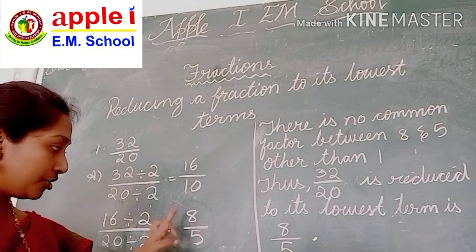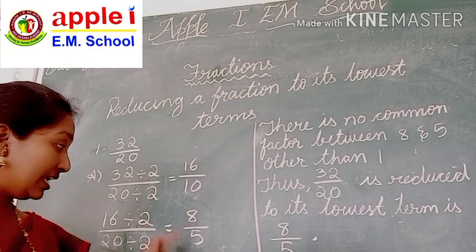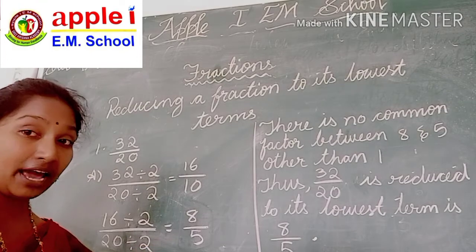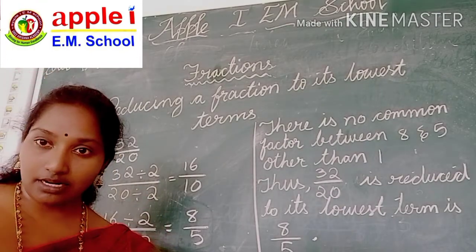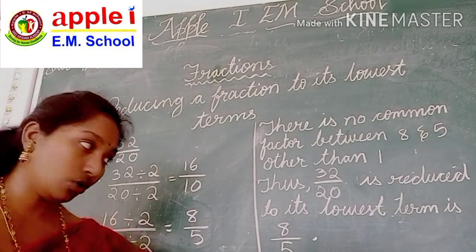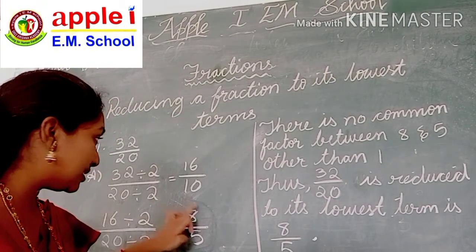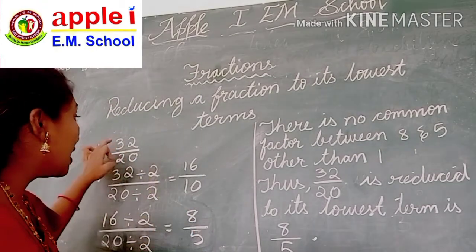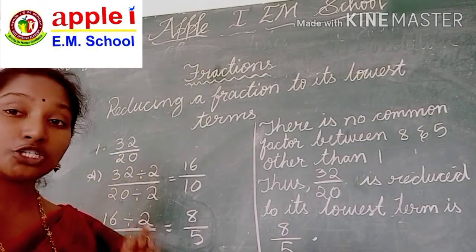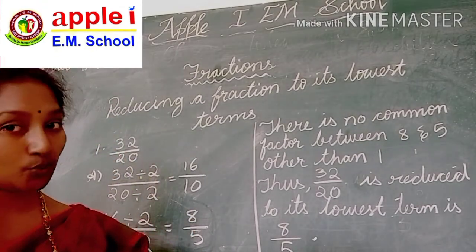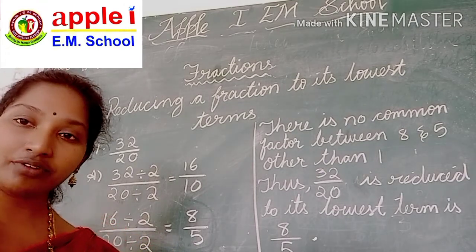Here you got 8 and 5. Now 8 and 5 will come only in the 1 times table. So this is the lowest term for 32 by 20. Understood everyone?